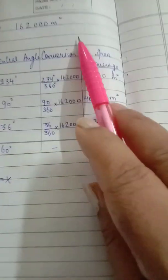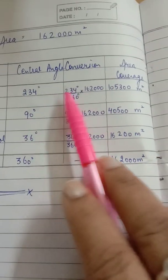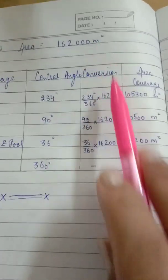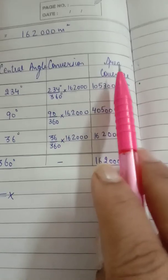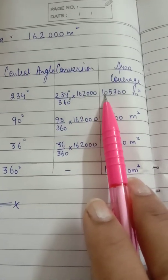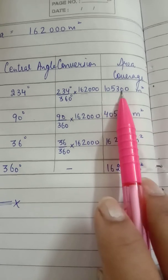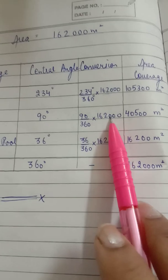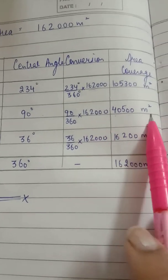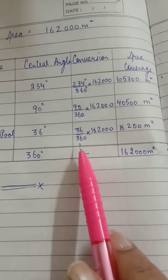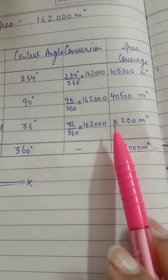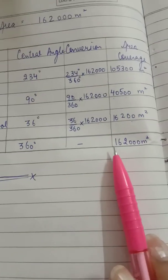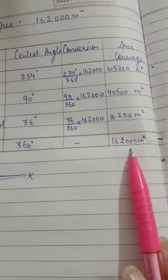Now for the conversion: first value 234, total is 360, and now we are converting into area, so the total area is this. We have to multiply it with 1 lakh 62,000 and the area coverage will come as 1 lakh 5,300 meter square. 90 degrees total of the degree, multiplied by the total area: 40,500 meters square. For the third one: 36 degrees upon 360 degrees into 1 lakh 62,000, which is 16,200 meter square. If you check the total, that is 1,62,000 meter square, which is the total land area.